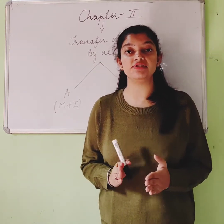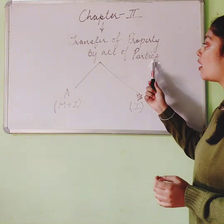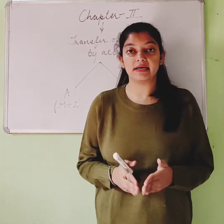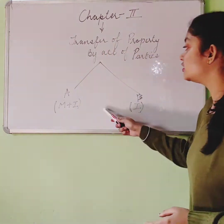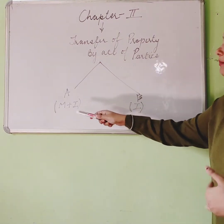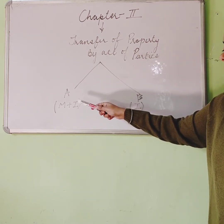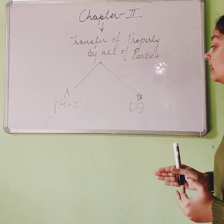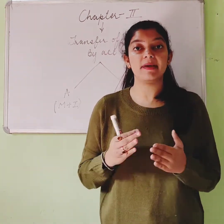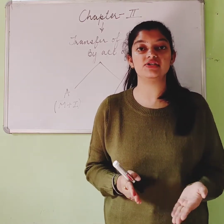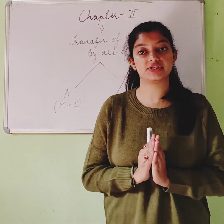Today we are starting Section 5 of the Transfer of Property Act. We are in Chapter 2, which deals with transfer of property by act of parties. This chapter is divided into two parts: Part A covers rules regarding both movable and immovable property, and Part B covers rules regarding only immovable property. Under Part A, under general provisions, the first section is Section 5.